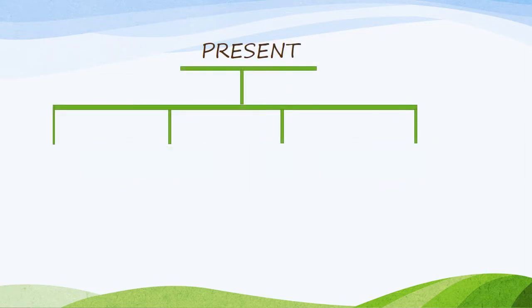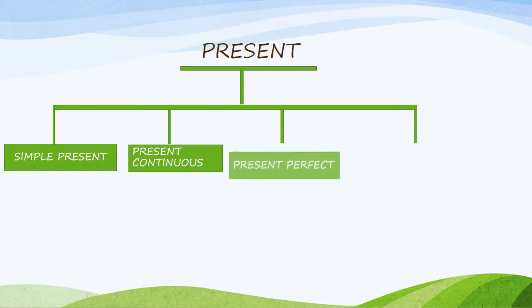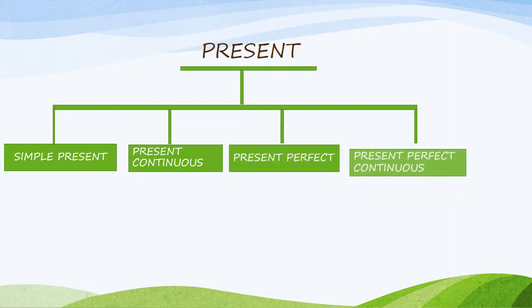Present tense is divided into four types. First, simple present. Second, present continuous. Third, present perfect. And fourth, present perfect continuous.